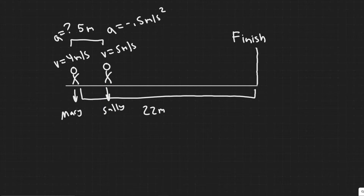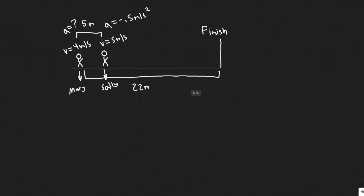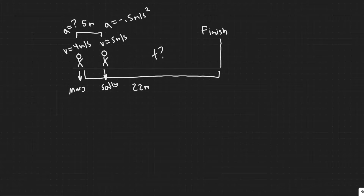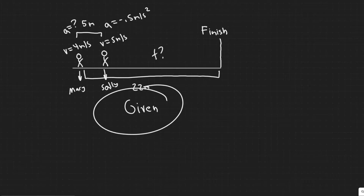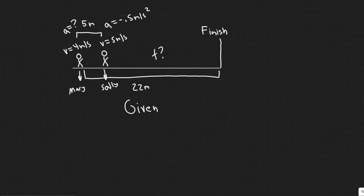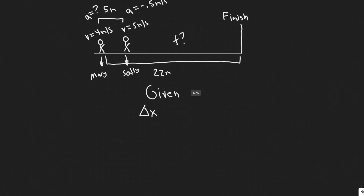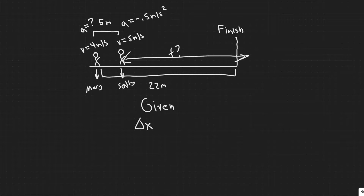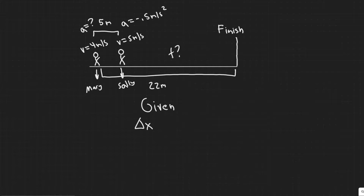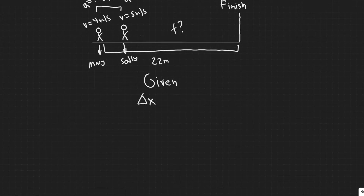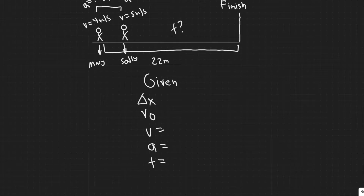The first thing we want to do is find Sally's time required to finish. We write down the given variables, and since we're dealing with kinematics, we write out the main kinematic variables. The main five kinematic variables are delta x — which is your change in position along the running axis — and then v sub zero, v, a, and t.